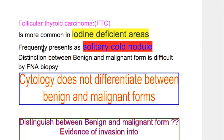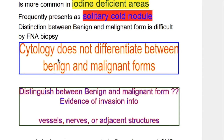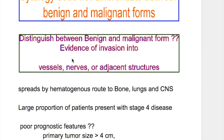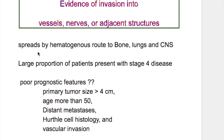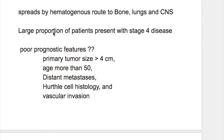Follicular thyroid carcinoma is more common in iodine-deficient areas and frequently presents as solitary cold nodules. Distinction between follicular adenoma and carcinoma is difficult by FNA biopsy — cytology cannot differentiate benign from malignant. Distinction is made by evidence of invasion into vessels, nerves, or adjacent structures. Follicular tumors spread hematogenously to bone, lungs, and CNS. A large proportion of patients present with stage 4 disease, hence the bad prognosis.